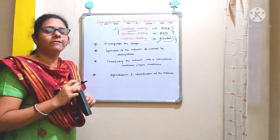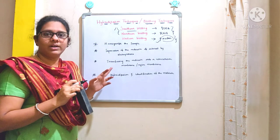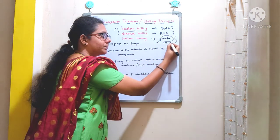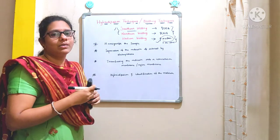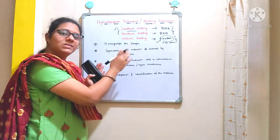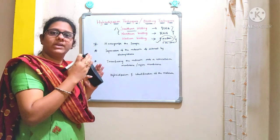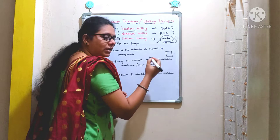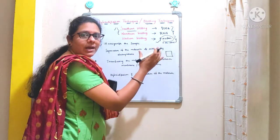After homogenization, the next step is separation of the molecule of interest by electrophoresis. For proteins you can use SDS-PAGE, and for nucleic acids — either DNA or RNA — you use agarose gel electrophoresis. You can also use polyacrylamide gels for nucleic acids. In electrophoresis, molecules are separated based on size and charge under the influence of an applied electric field.